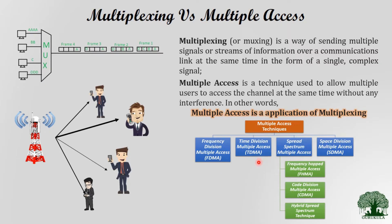The four major types of multiple access are: Frequency Division Multiple Access (FDMA), Time Division Multiple Access (TDMA), Spread Spectrum Multiple Access, and Space Division Multiple Access. Spread Spectrum is further classified into three types: Frequency Hopped Multiple Access, Code Division Multiple Access (CDMA), and Hybrid Spread Spectrum technique. Today we will discuss FDMA in detail.